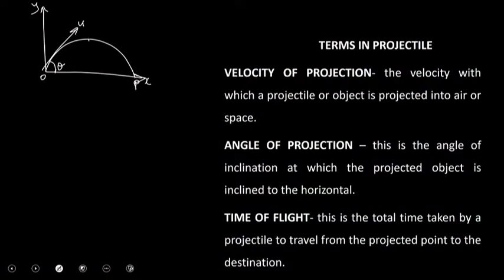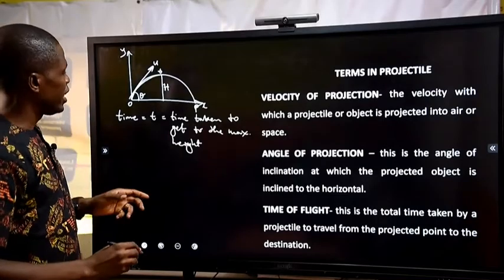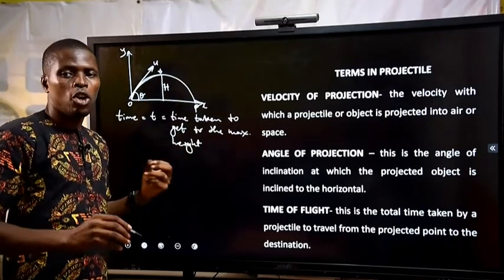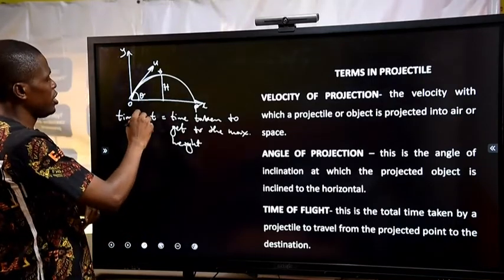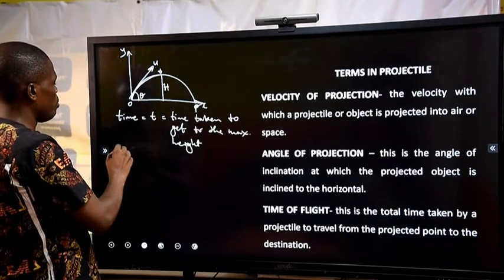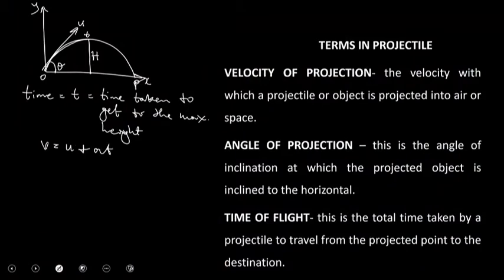We also have the time taken to get to the maximum height, which we call small t. This is the time taken from the point of projection to reach the maximum height h. To find this, we use the equation of motion v = u + at. At the maximum height, v equals zero. The acceleration a equals negative g, and the initial velocity u becomes the vertical component uy.